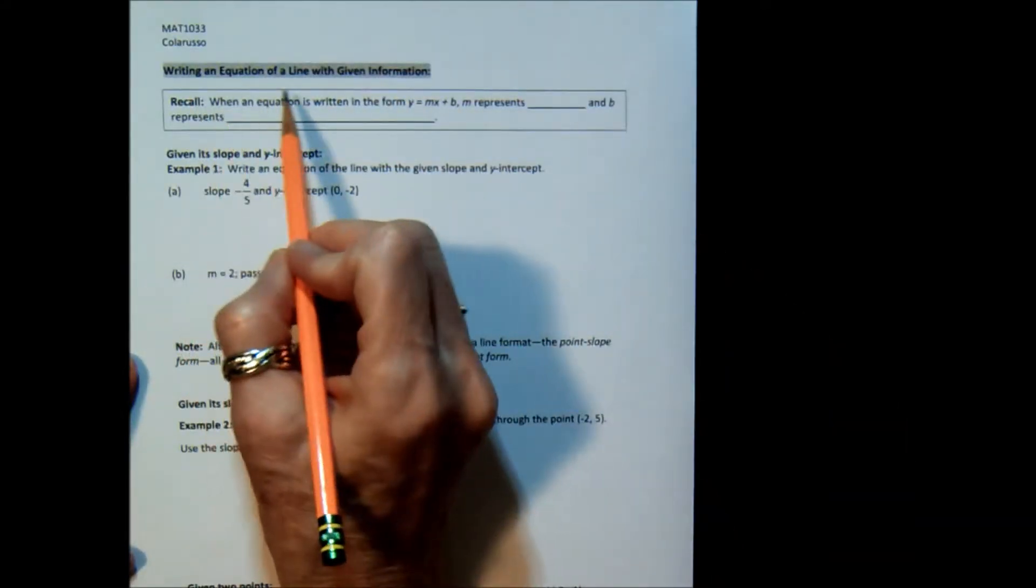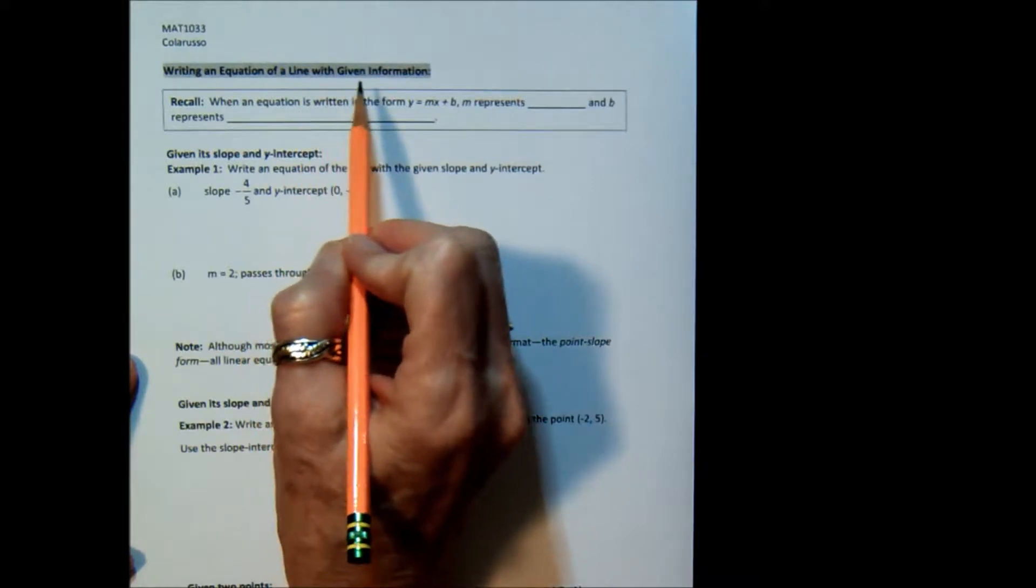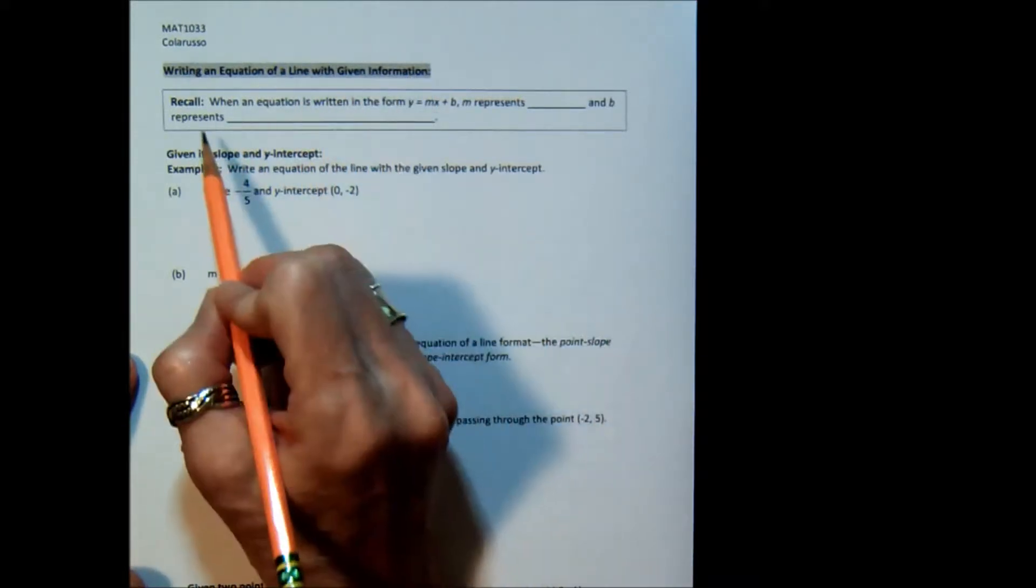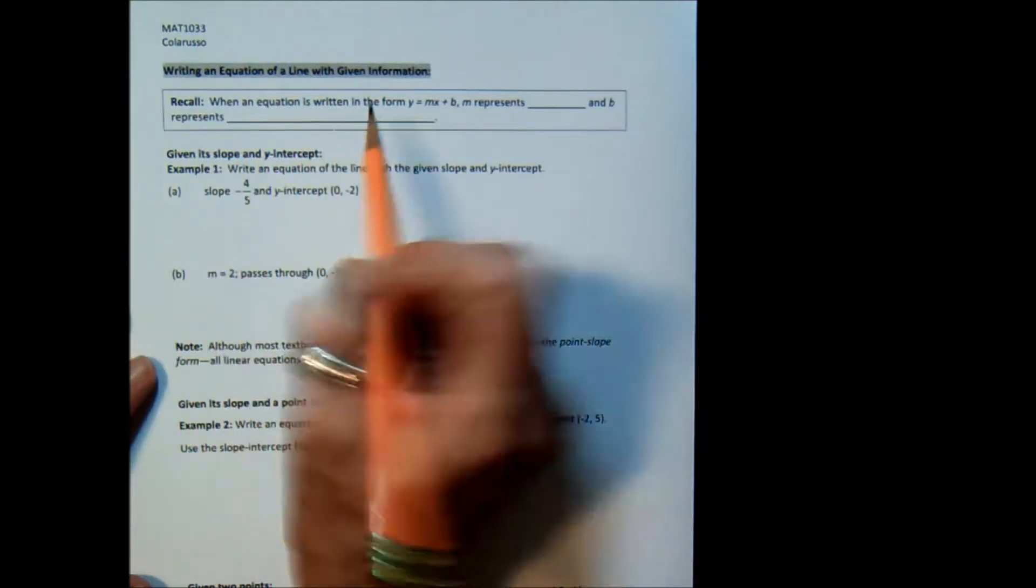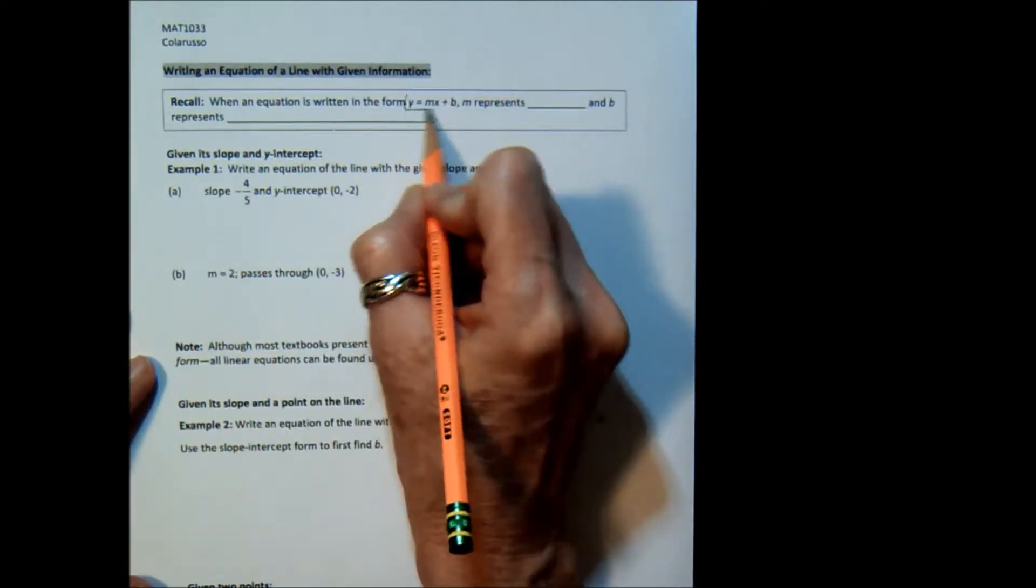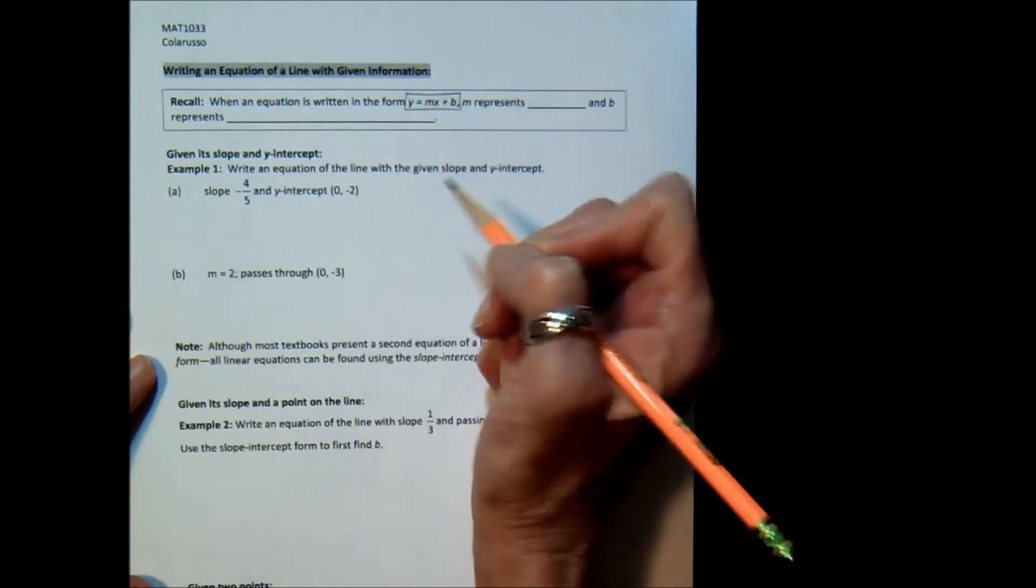This is on writing an equation of a line with certain given information. So let's look at the top in the box where it says recall. When an equation is written in the form y equals mx plus b, which we've talked about before...